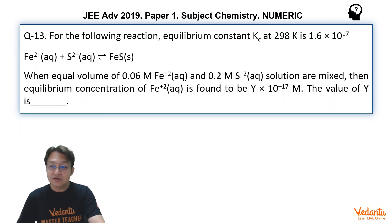The value of equilibrium constant is very high, 1.6 × 10^17. The strategy to solve this problem is, we will first find the initial concentration of Fe²⁺ and S²⁻ ion. Obviously, when we mix these two solutions, then the concentration will become half.